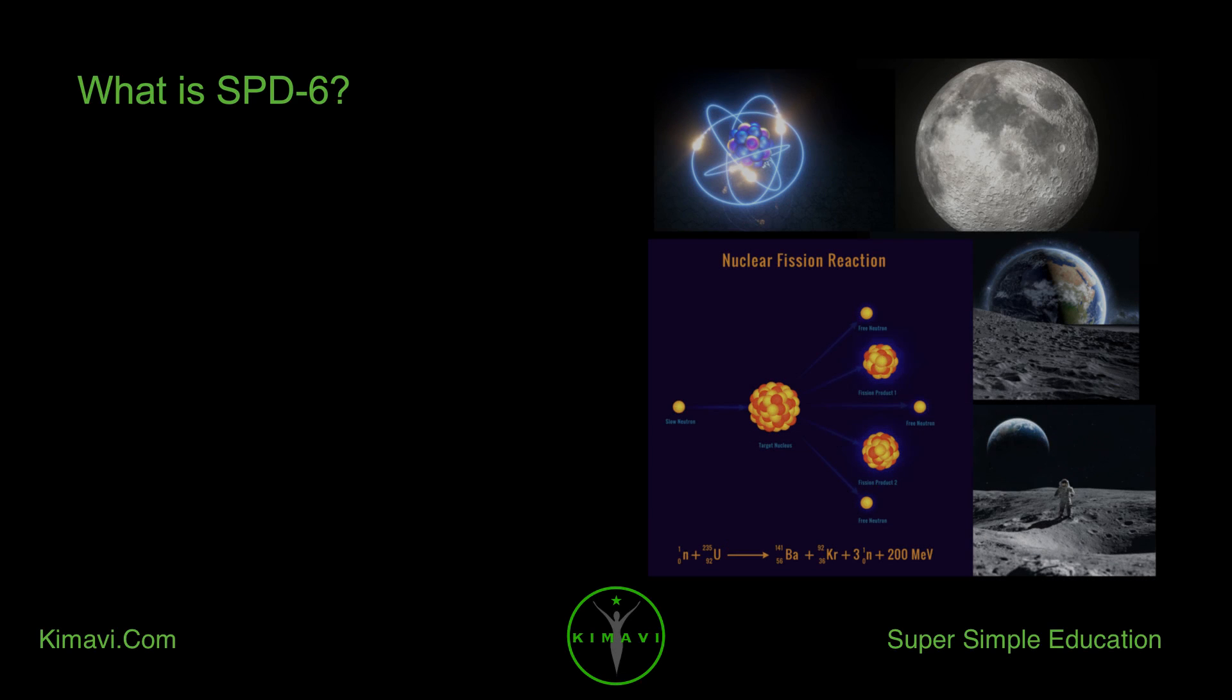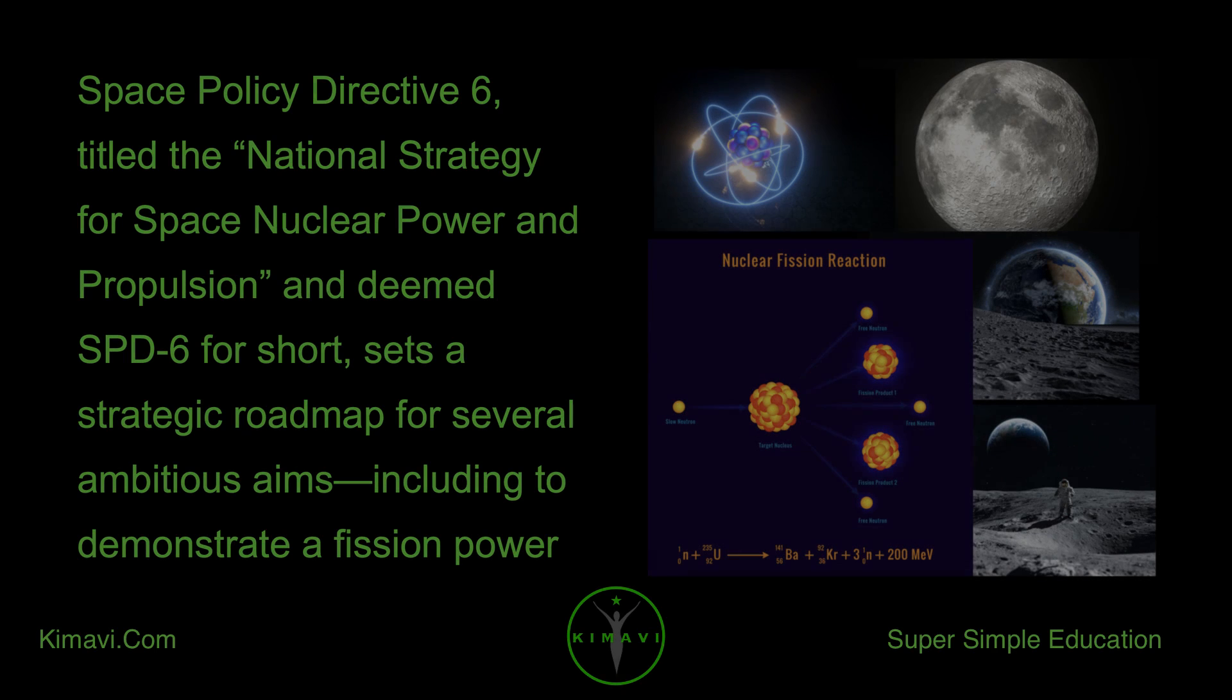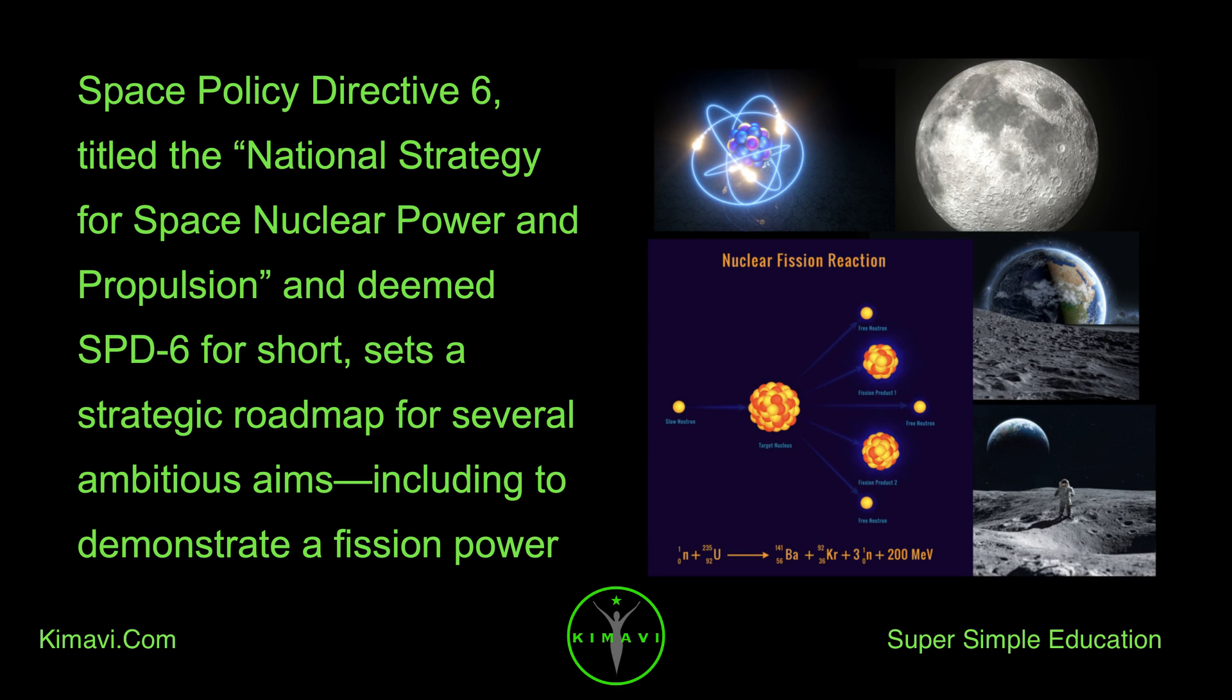What is SPD-6? Space Policy Directive 6, titled the National Strategy for Space Nuclear Power and Propulsion and deemed SPD-6 for short, sets a strategic roadmap for several ambitious aims, including to demonstrate a fission power system on the surface of the Moon by the mid to late 2020s.